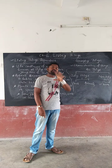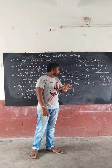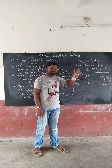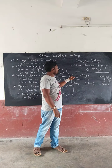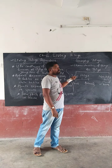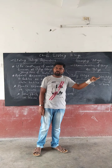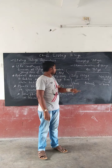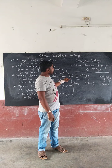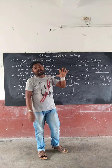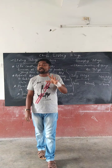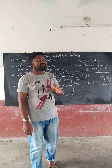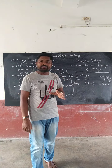Science divides all things into two parts: living things or non-living things. Living things can be plants or animals.